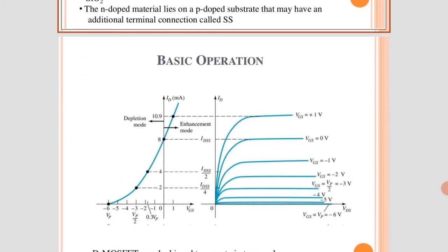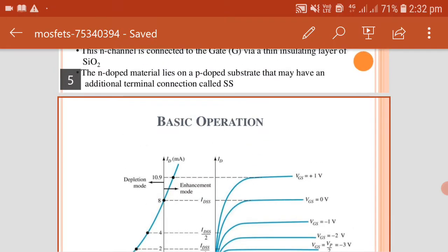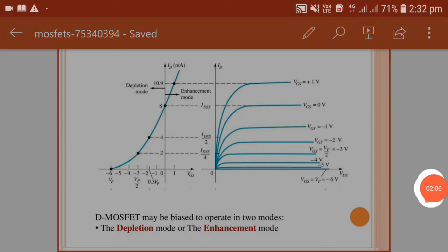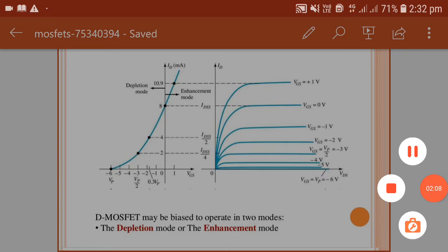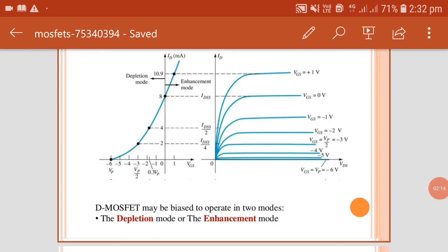The basic operation: the D-MOSFET may be biased to operate in two modes — the depletion mode or the enhancement mode. In depletion mode, the characteristic is gate-to-source voltage versus ID drain current. The gate-to-source voltage determines the drain current which is changed. The drain current ID changes according to the gate-to-source voltage in depletion mode.